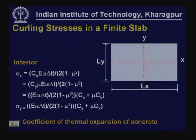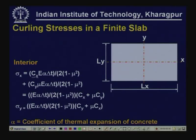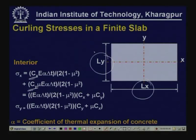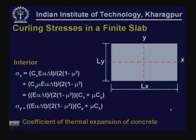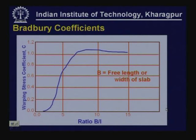These curling stresses can be computed using these expressions. Sigma X is a function of modulus value of concrete, alpha (the coefficient of thermal expansion), and delta T (the temperature differential from top to bottom). There are coefficients CX and CY that must be determined because the slab is finite — depending on the dimensions LX and LY we determine two coefficients CX and CY, then determine sigma X and sigma Y. Other information needed is the coefficient of thermal expansion of concrete and the temperature differential.